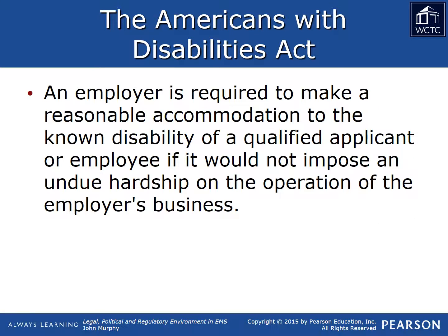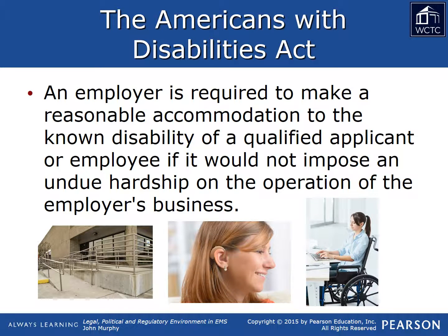Under the ADA, employers are required to make reasonable accommodations for qualified employees with a disability so long as the accommodations do not impose an undue hardship on the operation of the employer's business. What constitutes an undue hardship depends on the employer's size, financial resources, and the nature and structure of its operation. Reasonable accommodations may include making existing facilities readily accessible, job restructuring, modifying work schedules, reassignment to a vacant position, acquiring or modifying equipment or devices, adjusting or modifying examinations, training materials, or policies, or providing qualified readers or interpreters.